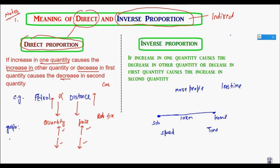When we draw a graph of direct proportion — for example, here I write distance and here I write petrol in the car — it will always be a straight line. The graph will always be a straight line. If two quantities are said to be in direct proportion, if x is directly proportional to y, I can write it as x upon y equals k, a constant.